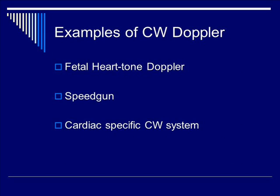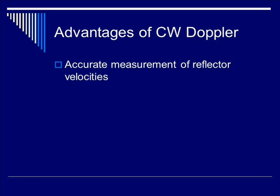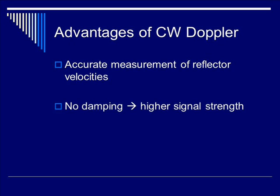Some examples of continuous wave Doppler include fetal heart-tone Doppler, speed guns, and cardiac-specific continuous wave systems. Advantages of continuous Doppler include accurate measurement of reflective velocities. There is no damping, therefore you have higher signal strength, and there is no aliasing.